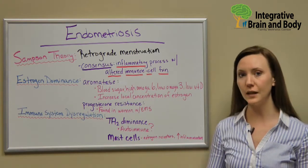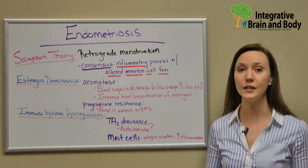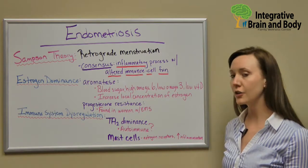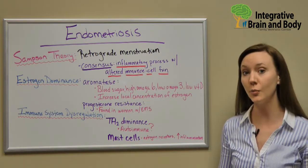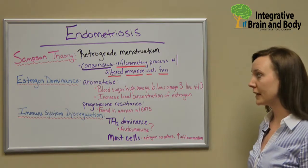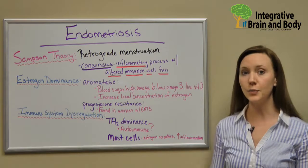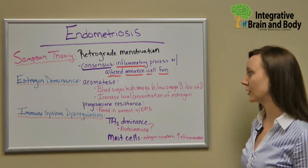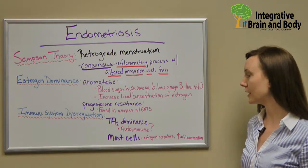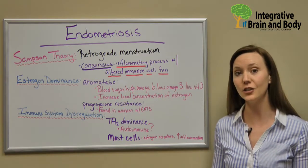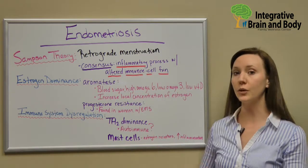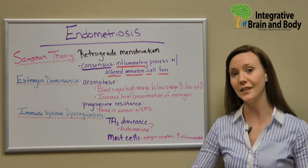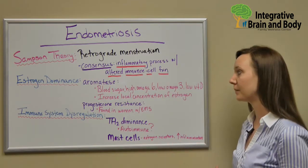Endometriosis is known as an estrogen dominant disease. We end up with a large amount of an enzyme called aromatase. Aromatase is brought on by blood sugar swings, high omega-6, low omega-3s, and low vitamin D. These are just some of the causes of aromatase, and we'll see a lot of estrogen production when we have a lot of this enzyme.